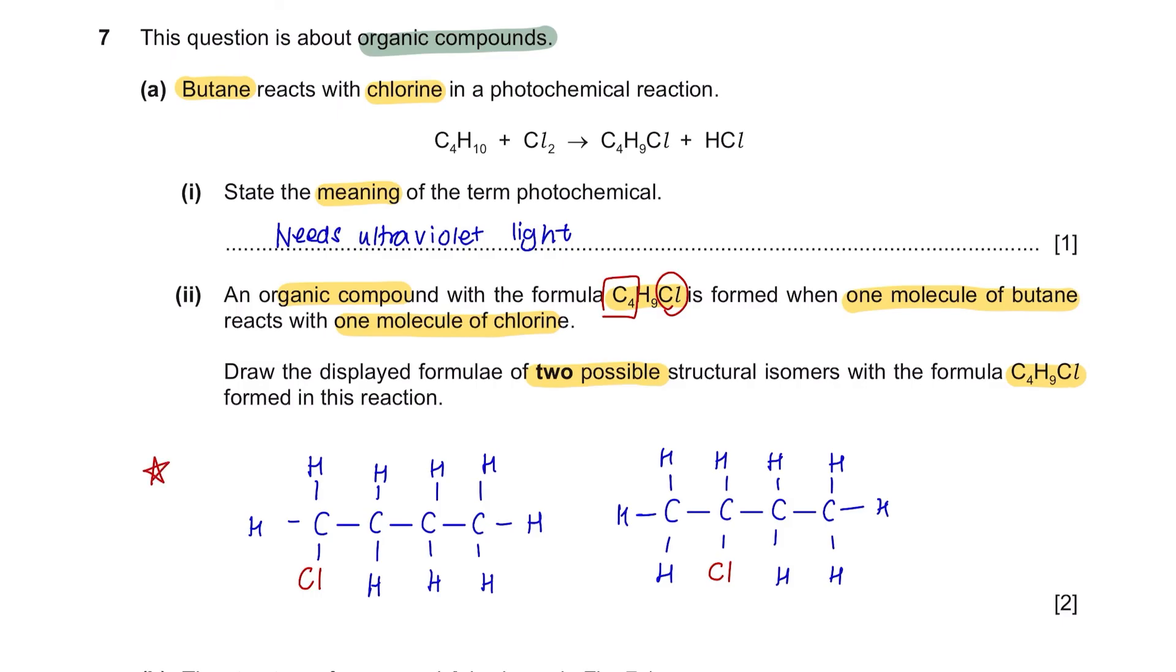Just an extra tip, if you were asked to name these isomers, since the chlorine is attached to the first carbon, it will be called 1-chlorobutane. And for the second isomer, the chlorine was attached at your second carbon, so it will be called 2-chlorobutane.